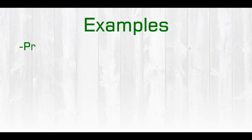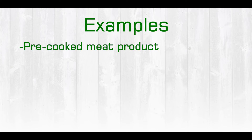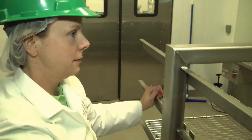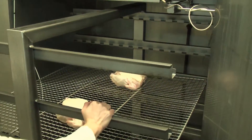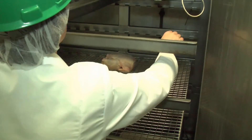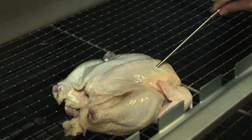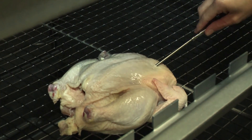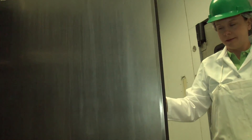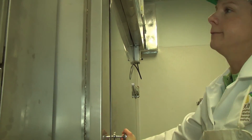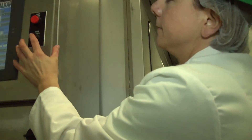Two specific examples where we would control critical limits would be for a pre-cooked meat product. In order to ensure that the appropriate time and temperature of that cooked meat product is achieved, we would consider the critical limits to be the internal product temperature and the amount of time that the product would need to stay at that temperature in order to control for microbiological contamination.